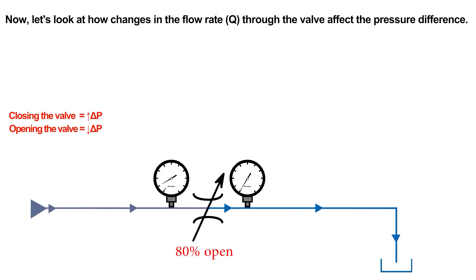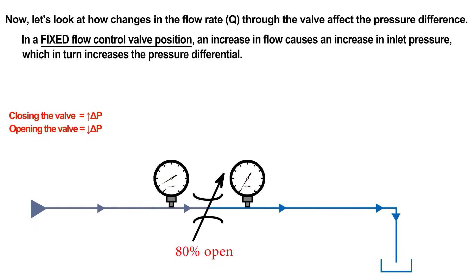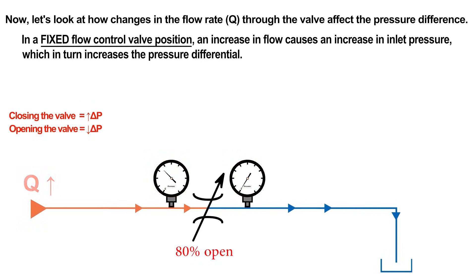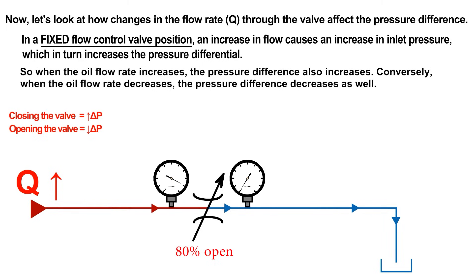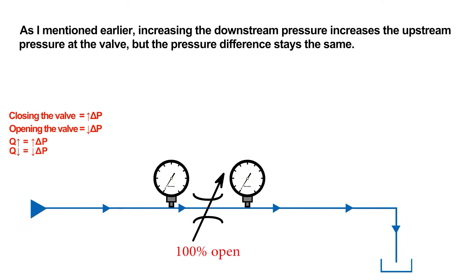Now, let's look at how changes in the flow rate through the valve affect the pressure difference. In a fixed flow control valve position, an increase in flow causes an increase in inlet pressure, which in turn increases the pressure differential. So when the oil flow rate increases, the pressure difference also increases. Conversely, when the oil flow rate decreases, the pressure difference decreases as well. As mentioned earlier, increasing the downstream pressure increases the upstream pressure at the valve, but the pressure difference stays the same.